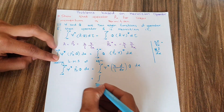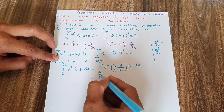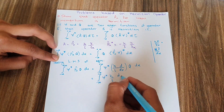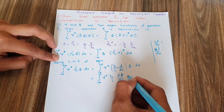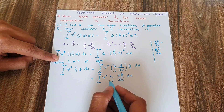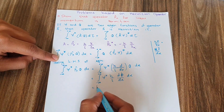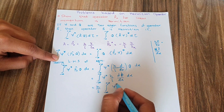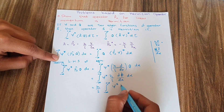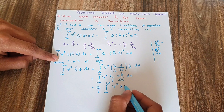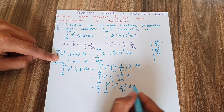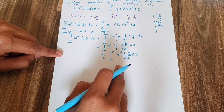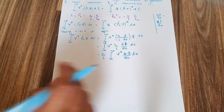The equation is now: from negative infinity to positive infinity, psi* times (ℏ/i)(d phi/dx) dx. Since ℏ/i is a constant, I can take it outside the integration. This leaves the integral from negative infinity to positive infinity of psi* times d phi/dx, dx. Now we need to evaluate this integral.